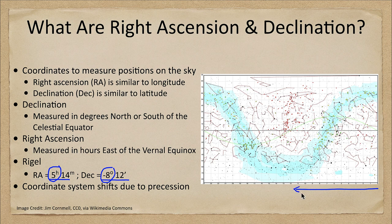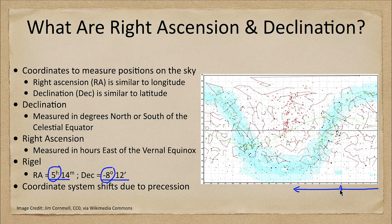Right ascension increases moving to the left because sky charts are always backwards — you are inside the sphere looking up at it. It's like looking from the interior of a crystal earth, where countries would appear reversed. Moving to about five hours of right ascension and negative eight degrees declination — close to negative ten degrees on the chart — we find the bright star near that intersection, which is Rigel in Orion. This demonstrates how we use these coordinates to measure the position of objects in the sky.